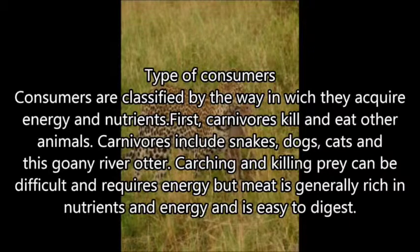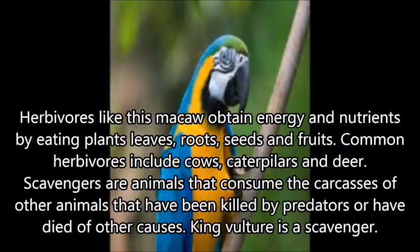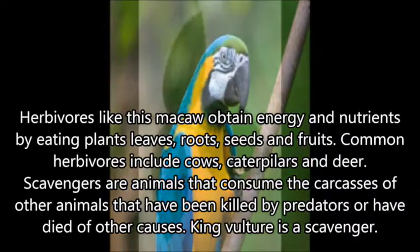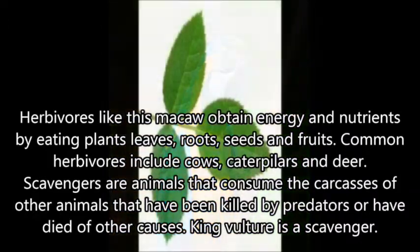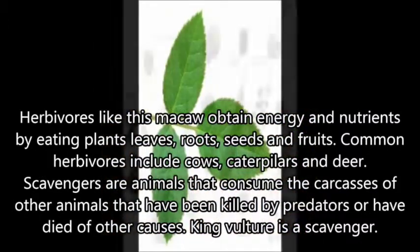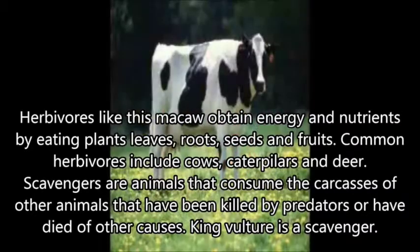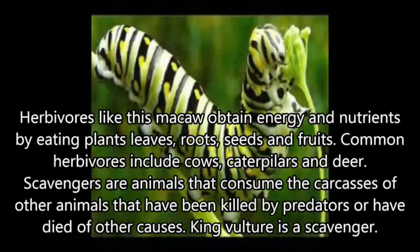Catching and killing prey can be difficult and requires energy, but meat is generally rich in nutrients and energy and is easy to digest. Herbivores, like the imago, obtain energy and nutrients by eating plants' leaves, roots, seeds, or fruits. Common herbivores include cows, caterpillars, and deer.